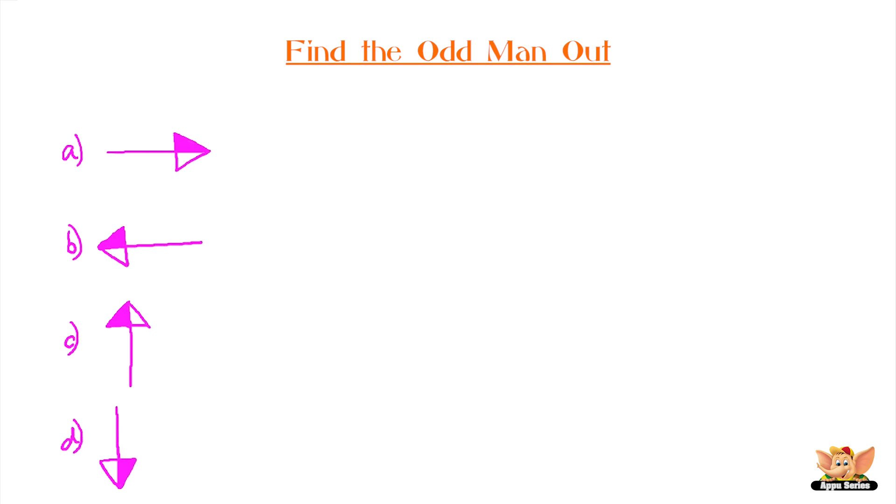B is the odd one out because it is a mirror image of the other three arrows.